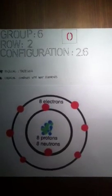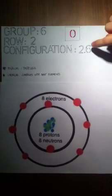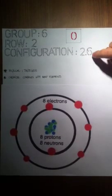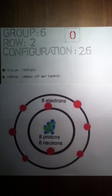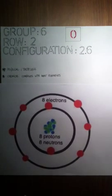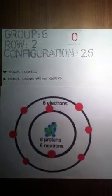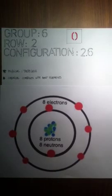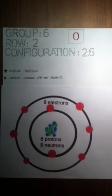Now, the reason oxygen is in group 6, row 2, is because the configuration's last number is 6, which means the number of valence electrons on the outer shell is 6, so it goes in group 6 because the groups go by valence electrons. The reason it's in row 2 is because its valence energy level is 2, because there are 2 numbers in the configuration.